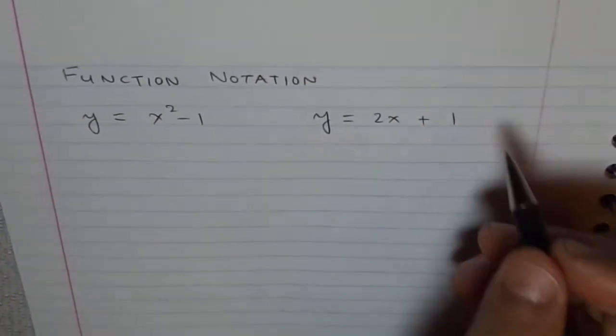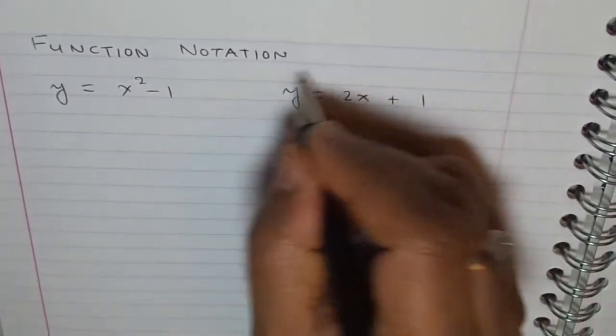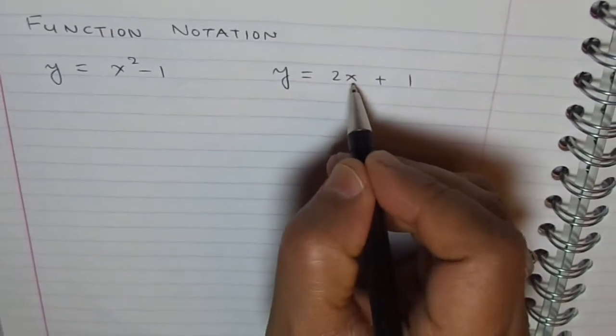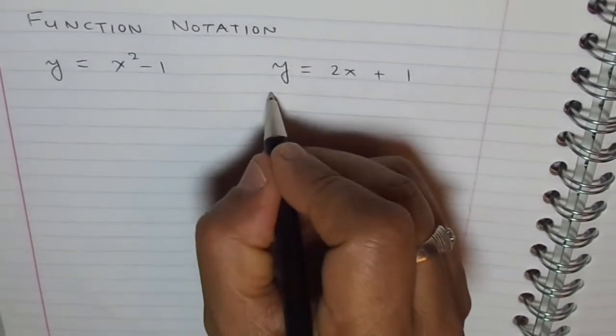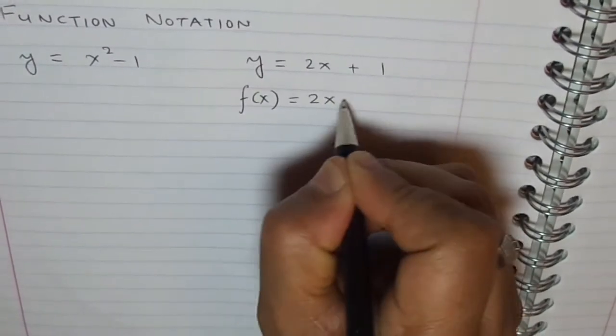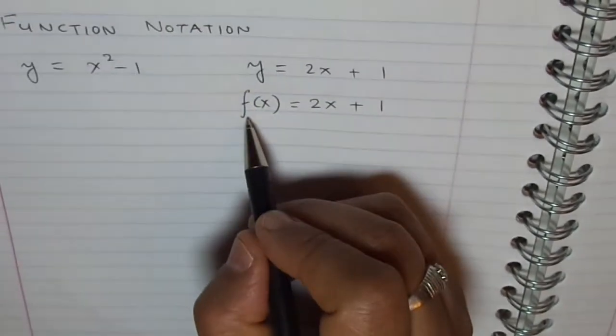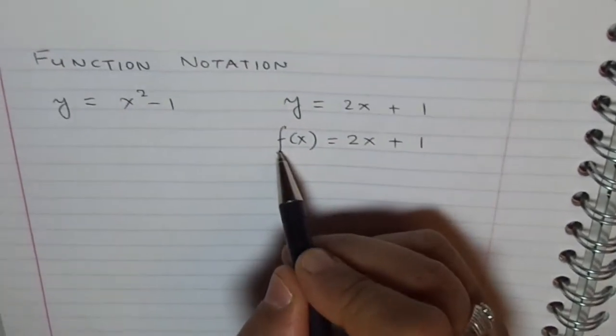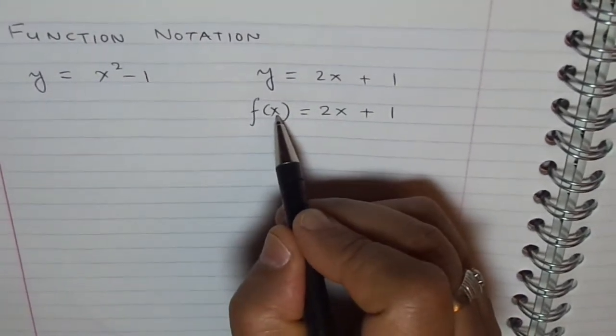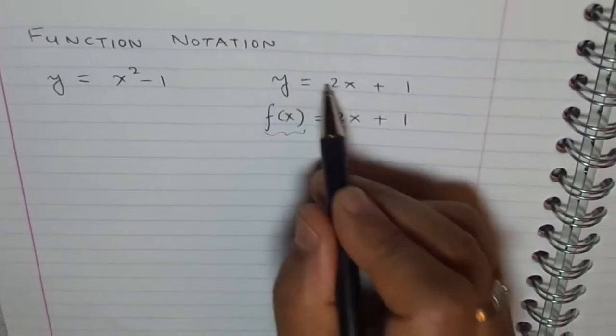And see how simple it is. We just replace y with f(x). So we can call this particular equation with a function f. And since the independent variable is x, we will write this as f of x equals 2x plus 1. Remember, the name of the function, we are giving it as f. This is an argument, the input variable x. And f of x gives us the output value which is same as y in this equation.